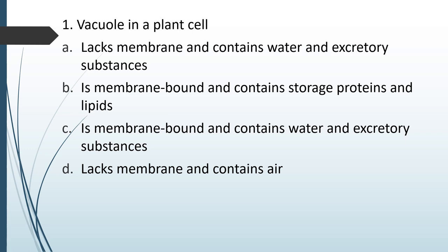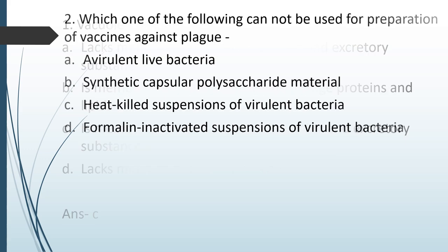Vacuole in a plant cell: (A) lacks membrane, contains water and excretory substance; (B) is membrane bound, contains storage protein and lipids; (C) is membrane bound, contains water and excretory substance; (D) lacks membrane and contains air. The correct answer is option C — it is a membrane bound organelle and contains water and excretory substances.